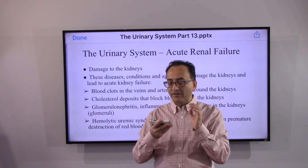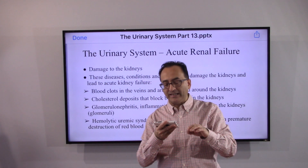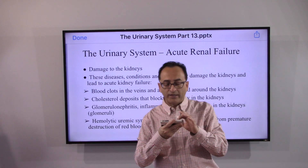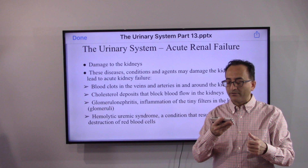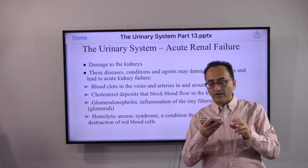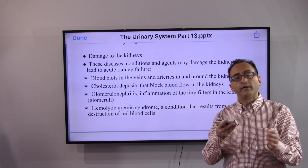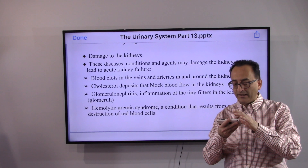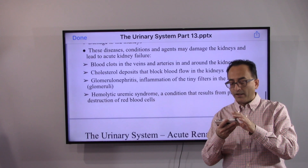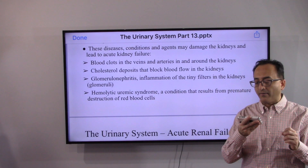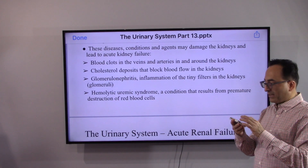Various diseases, conditions, and agents may damage the kidneys and lead to acute kidney failure, including blood clots in the veins or arteries around the kidneys, too much cholesterol plaque blocking normal blood flow, inflammation in the tiny filters of the kidney, and hemolytic uremic syndrome — a condition resulting from premature destruction of red blood cells.